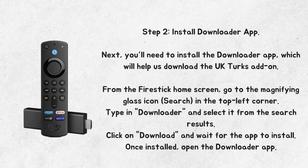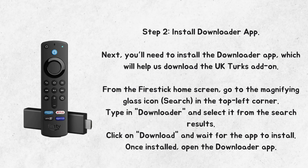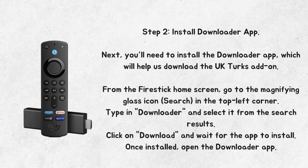Step 2: Install the Downloader app. Next, you'll need to install the Downloader app, which will help us download the UK Turks add-on. From the Fire Stick home screen, go to the magnifying glass icon — the search in the top left corner. Type in Downloader and select it from the search results. Click on Download and wait for the app to install. Once installed, open the Downloader app.